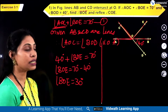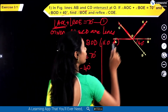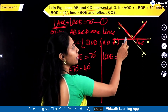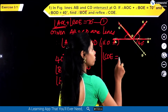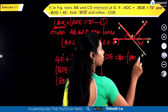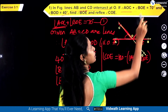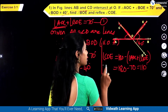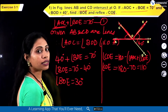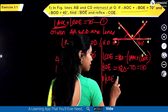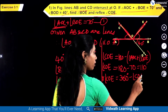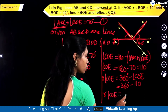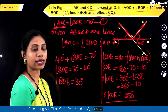So angle BOE is equal to 70 degrees minus 40 degrees, giving us angle BOE equal to 30 degrees. Now we have to find reflex angle COE. Angle COE is 180 degrees minus angle AOC plus angle BOE, which is 180 degrees minus 70 degrees, giving us 110 degrees. Reflex angle COE is 360 degrees minus 110 degrees, which is 250 degrees.